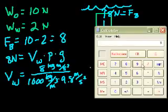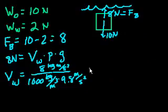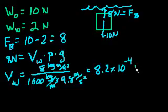So I have 8 divided by 1,000 divided by 9.8 is equal to 8.2 times 10 to the negative 4. It equals 8.2 times 10 to the minus 4 cubic meters.